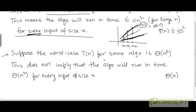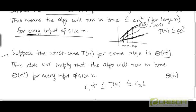The worst case was a quadratic function. So if the quadratic function representing the worst case is Θ(n²), this does not imply that the algorithm runs in time Θ(n²) for every input of size n. For an algorithm to run in time Θ(n²), the running time t must be bounded from below and from above by two constant multiples of n², and this must hold for all sufficiently large values of n.